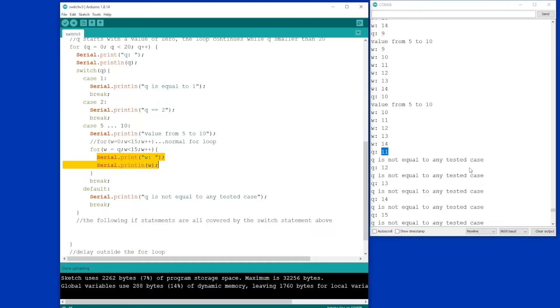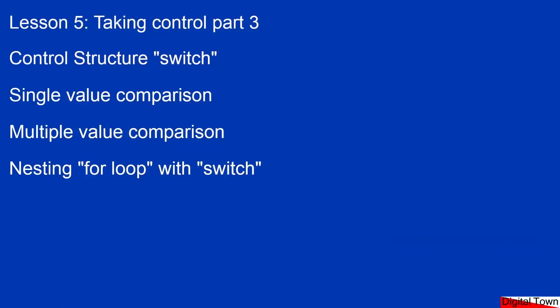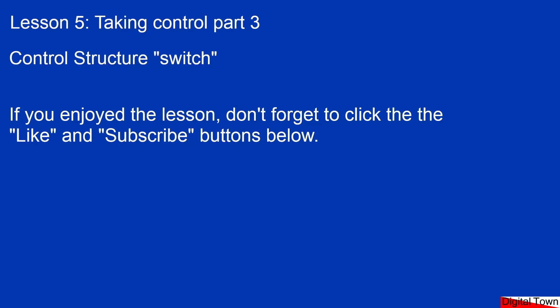I hope this lesson has been useful. Looking back at what we've done: we've used the control structure of switch, we've learned to use case for a single value and case for a multiple value comparison using the range syntax, and finally we've nested a for loop within a switch statement. Thanks for watching — if you like the lesson click like and subscribe, and hope to see you back in the next lesson. Bye for now.